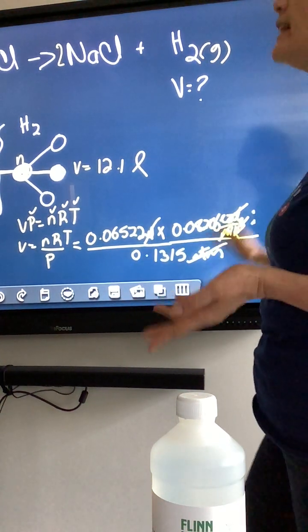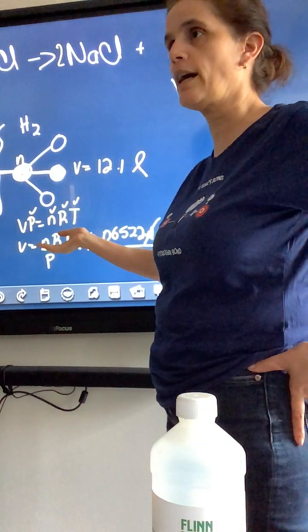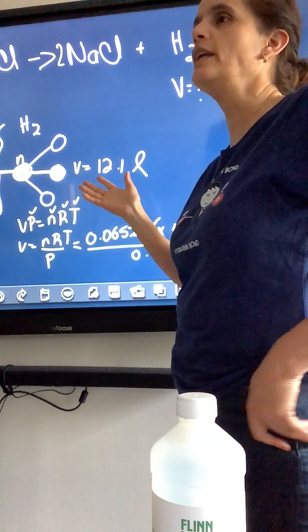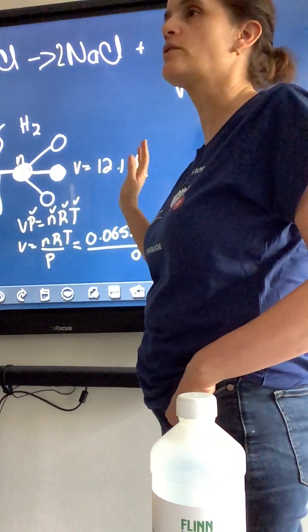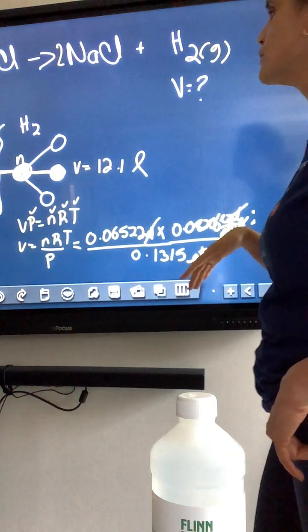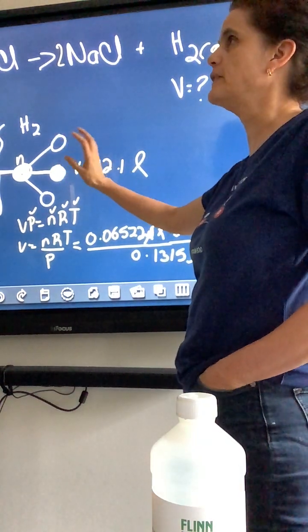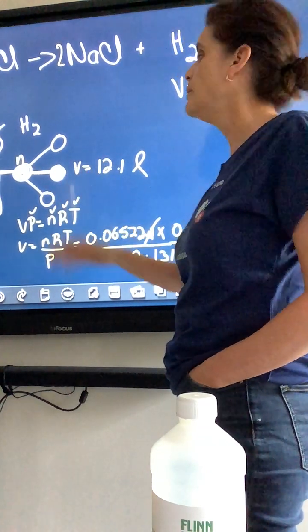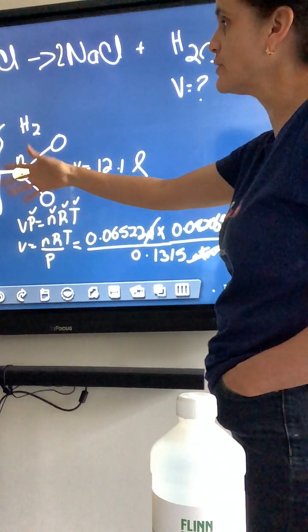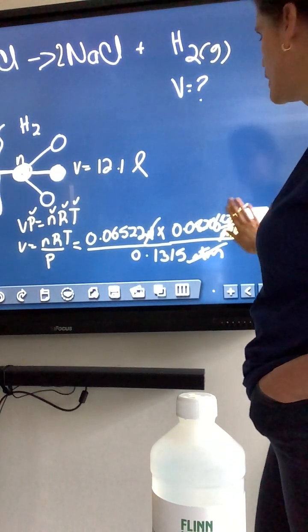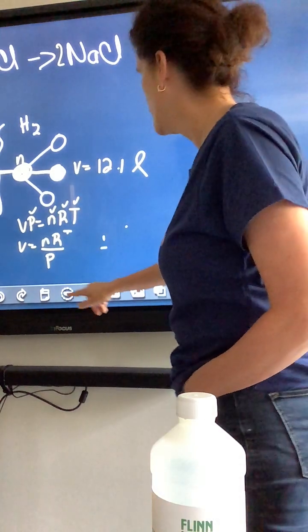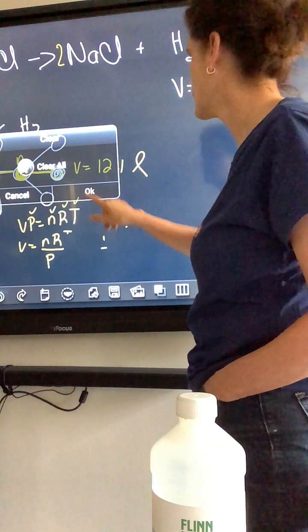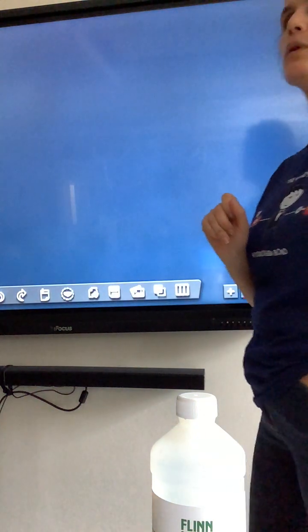And if you have STP, could you use the ideal gas law if you have standard temperature and pressure? Yes. But you shouldn't, because 22.4 will make your math so much simpler, right? So, what I used to say is if it's at standard temperature and pressure, it's like Merry Christmas. You're pretty much done. But if you're not, then it's not bad, but it does require a lot more that is cumbersome.